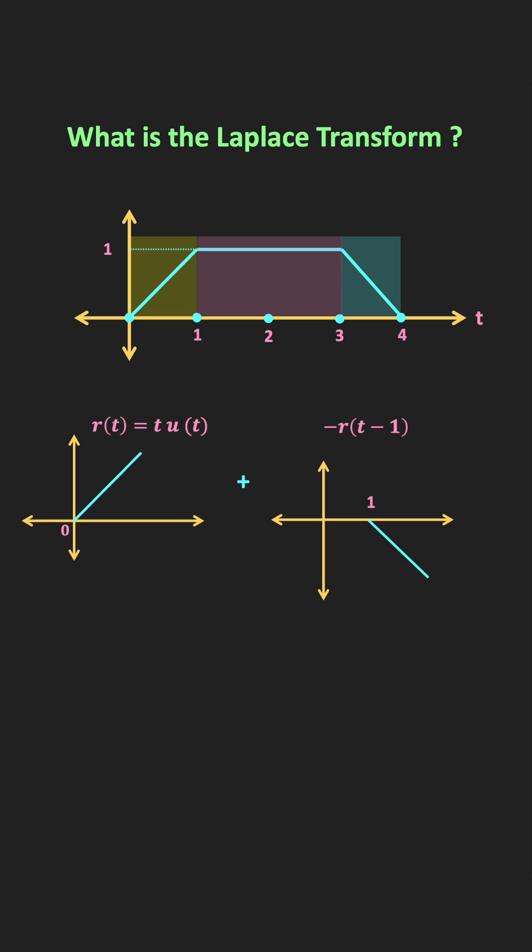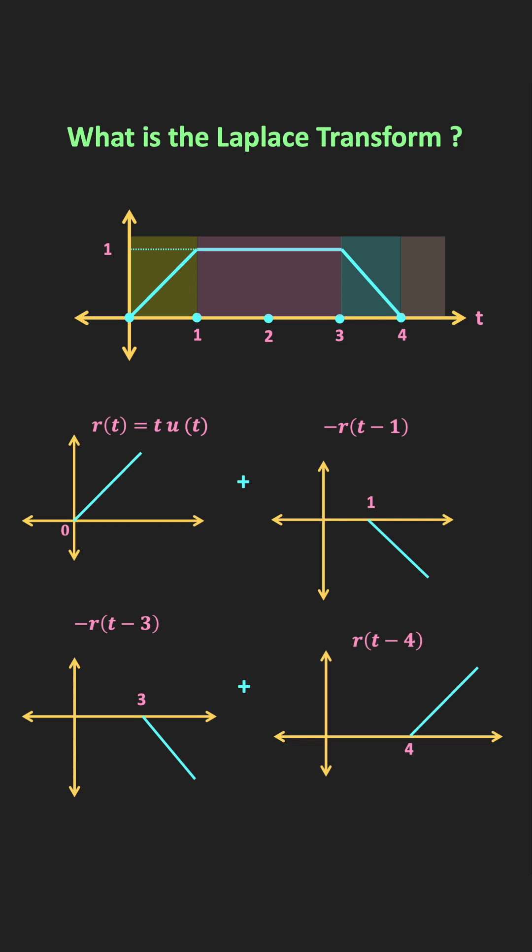Now during the time 3 to 4, the slope of this function is equal to minus 1, so mathematically that is equal to minus R. And from time 4 onwards, the slope of this function is equal to 0. That means at time t equal to 4, we need to add a ramp function which has exactly opposite slope of minus R, so mathematically that is equal to R.